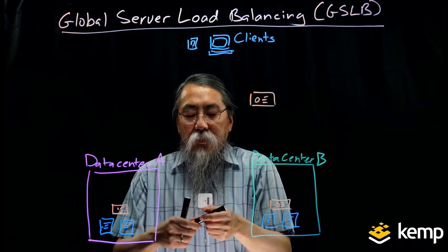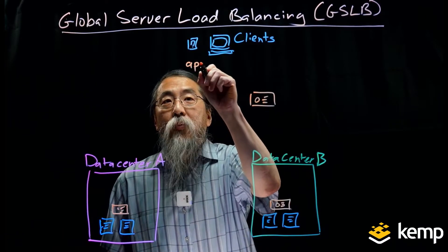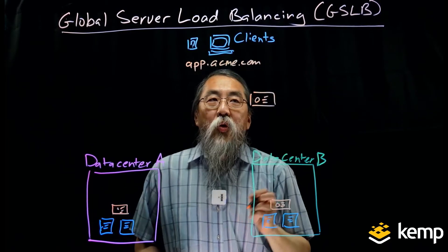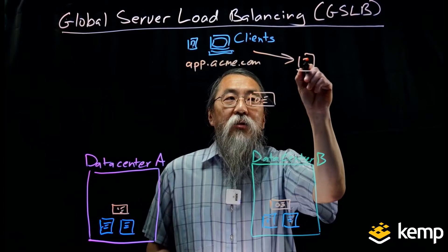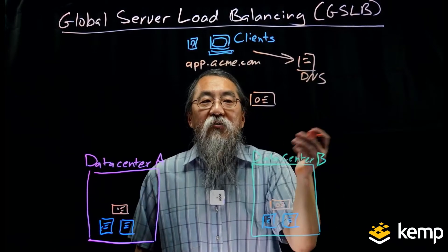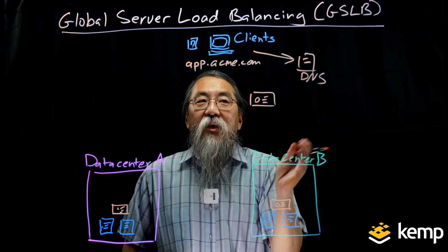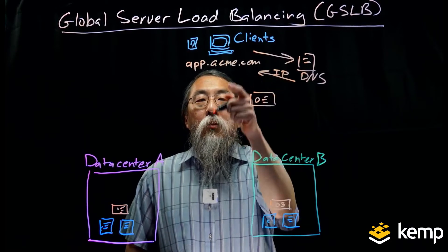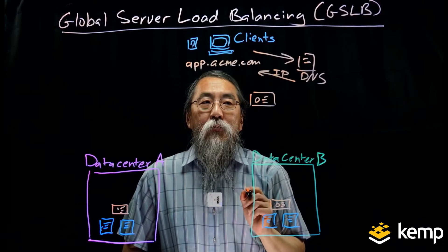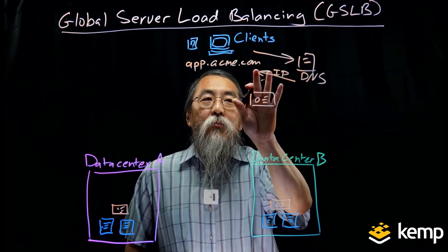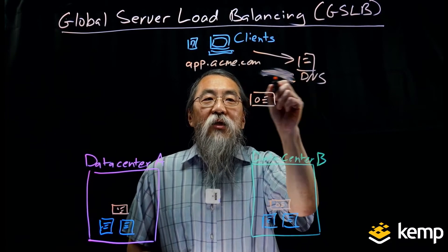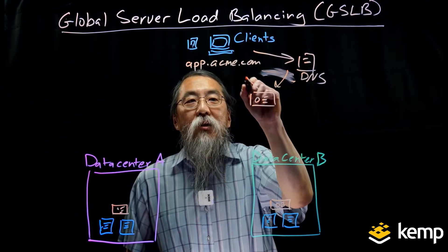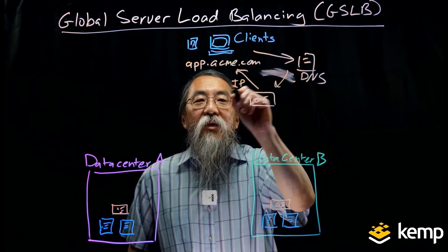When the client makes a DNS request — going to app.acme.com — that request goes through the process of root DNS servers, the company servers, etc. Traditionally those DNS servers would give an IP address for that name, and the clients would go to that IP address to hit the application. We're going to insert the load balancer into this process so that the DNS servers forward traffic to the global server load balancer, which then makes the response and gives the IP address that the clients will go to.